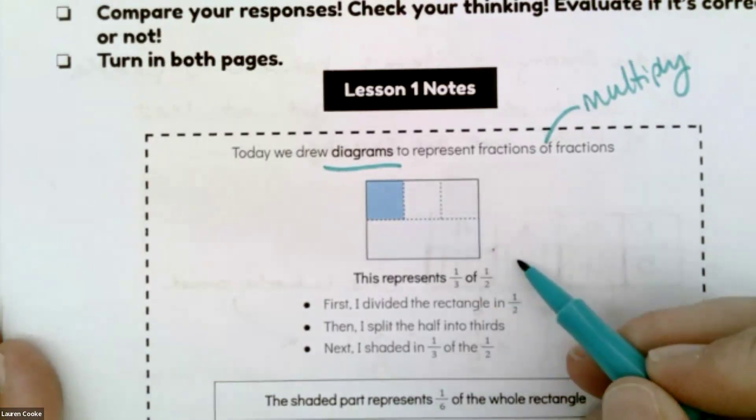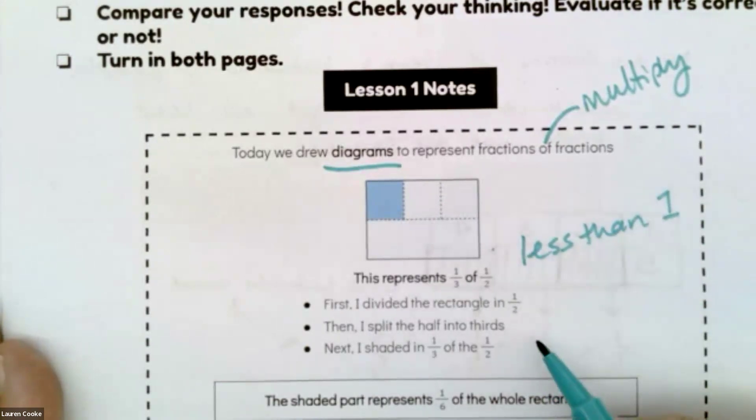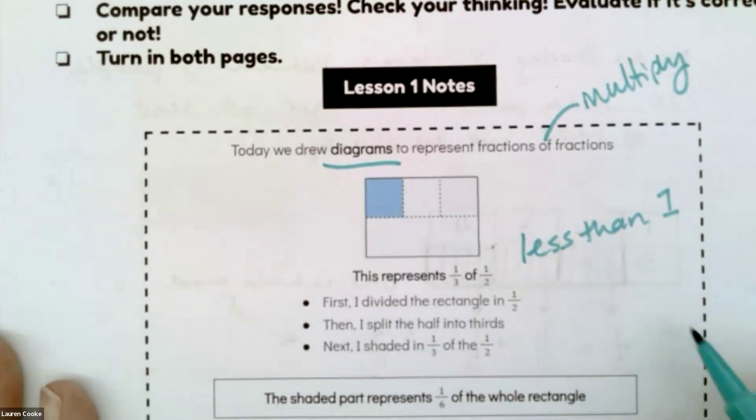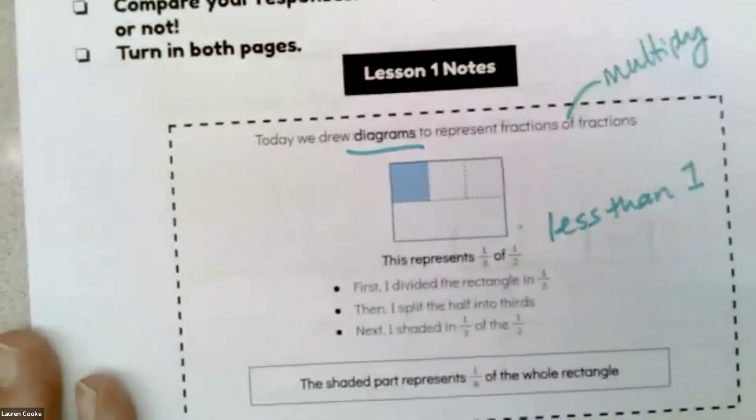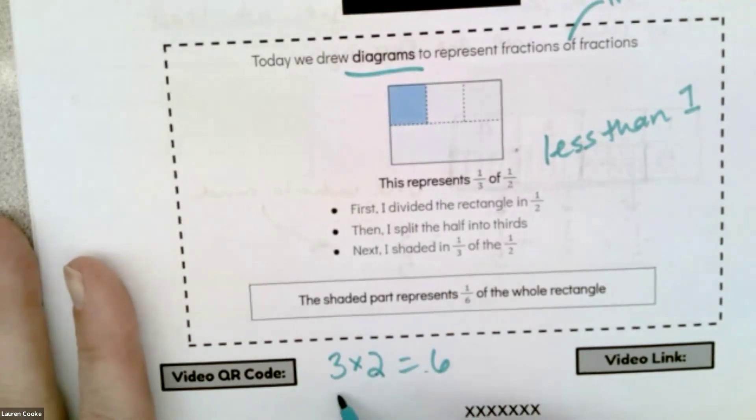The thing that's going to be important is we have these numbers that are less than one, so these are really small numbers. When we multiply them, the opposite of what we're used to happens. Your whole life, 3 times 2 is going to equal 6, so both the 3 and the 2 are smaller than the product.